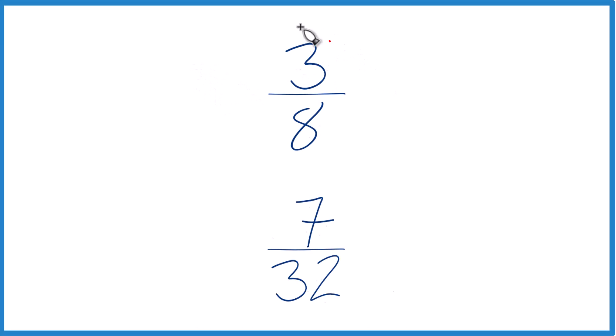Let's see if we can figure out whether 3 eighths is larger than 7 32nds. You could just take 3 and divide it by 8 on a calculator, get a decimal, 7 divided by 32, get a decimal, and just compare the decimals. That would tell you which one of these is greater.